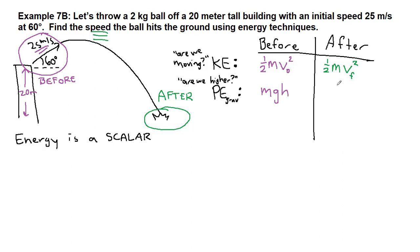The next term is potential energy from gravity. This is asking ourselves, are we higher than we were at other points in the problem? At the beginning, we are at the top of a building, a 20 meter tall building, so yes, we are definitely higher at the start. That means we can't be higher at the end.